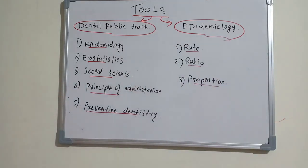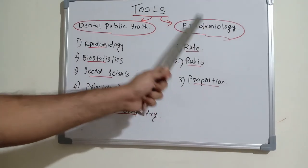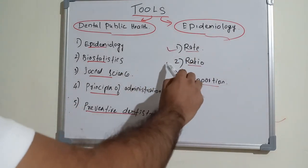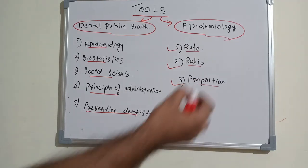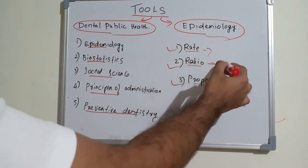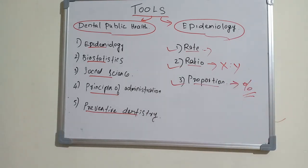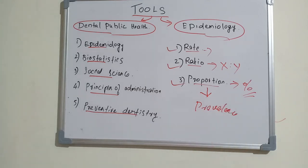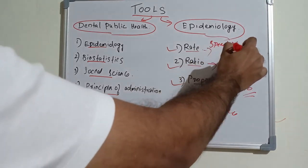Now, let's look at the tools of epidemiology. Epidemiology is itself a tool of dental public health, and epidemiology further has three tools: rate, ratio, and proportion. Ratio is expressed as x to y — two parameters compared. Proportion is expressed as a percentage; the most common proportion is prevalence, meaning how many people in a total population are affected by a disease. Rate refers to the speed of progression of a disease.